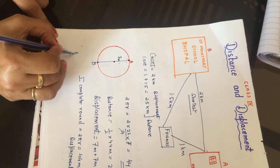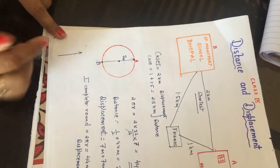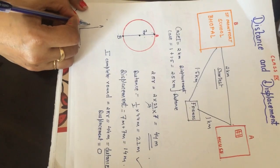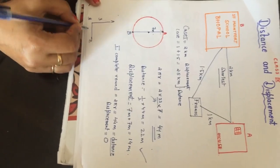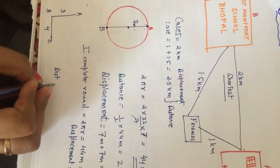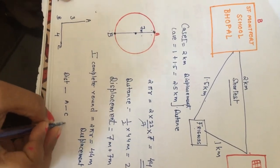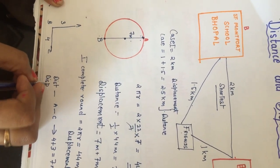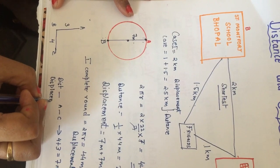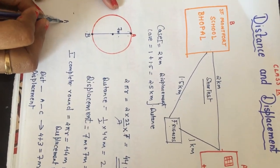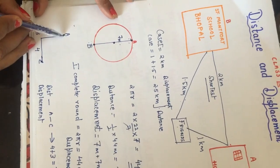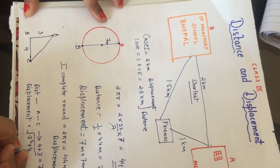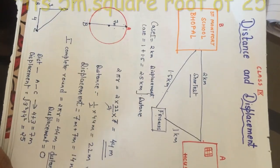One more example: you start from point A, move to point B, then to point C. Let the length AB be 4 meters and BC be 3 meters. The total distance traveled from A to C is 4 + 3 = 7 meters. But the displacement — the straight line joining A to C — is the hypotenuse. By the Pythagorean theorem: √(3² + 4²) = √25 = 5 meters.